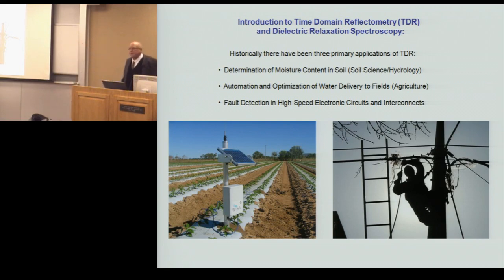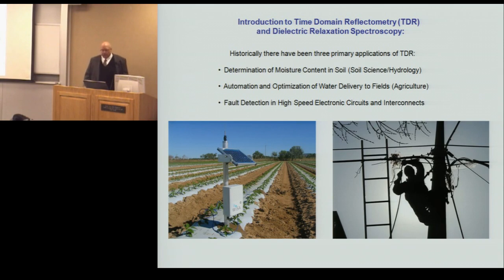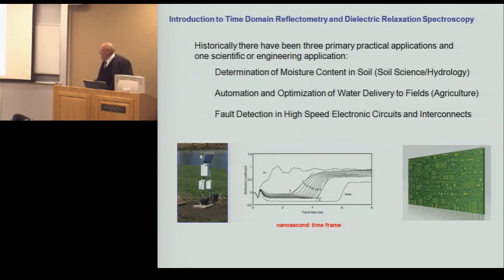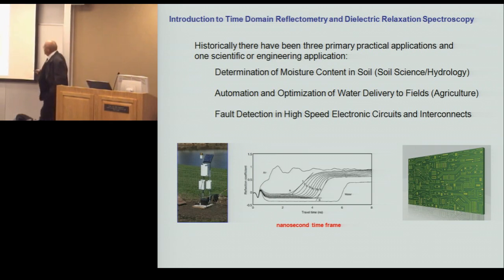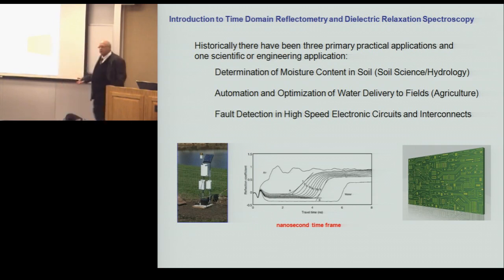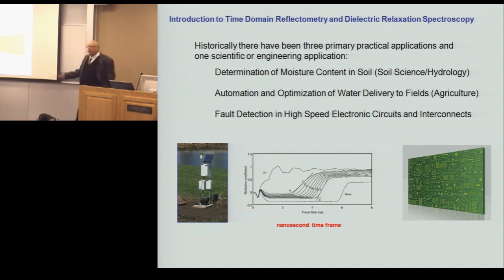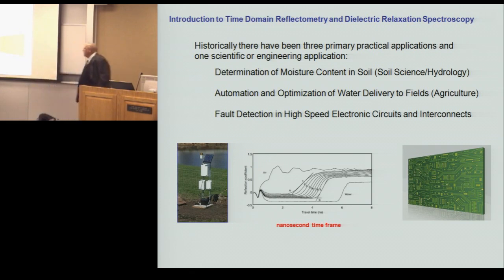When there are unwanted reflections during a digital transmission, it can cause a great number of errors to accumulate. In the soil science application, you send a pulse down through the metal detector system and the reflection comes back delayed depending upon the dielectric properties of the soil in contact with the metal rods. Depending upon the amount of water in the soil, the time delay before reflection changes, and one can fit this time delay to calibration data to determine roughly the percentage of water present.